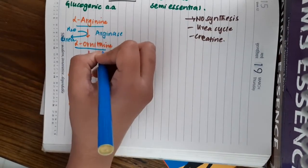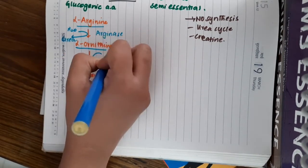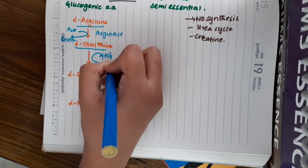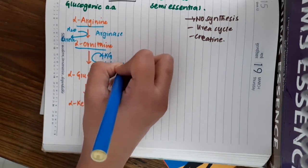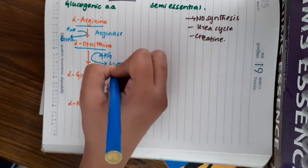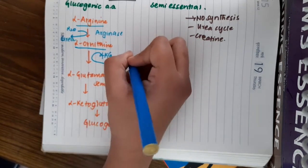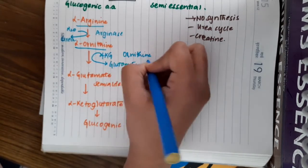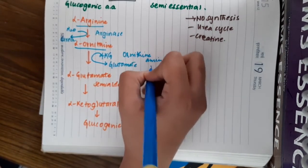This L-ornithine combines with alpha-ketoglutarate and it forms glutamate and L-glutamate semi-aldehyde. And during this process, the enzyme used here is ornithine aminotransferase.